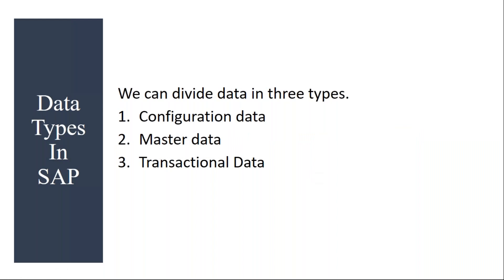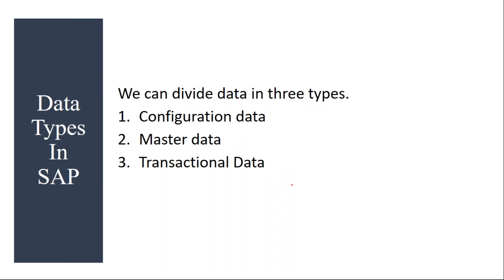Basically, the data in SAP is divided into three types. The first is configuration data, the next one is master data, and the third one is transactional data. We will understand what this data is, how they are defined in the system, and how they are used in the system. We will understand in the subsequent slides.